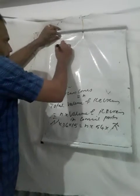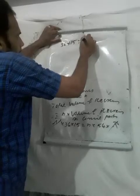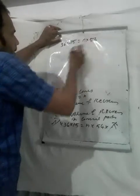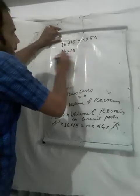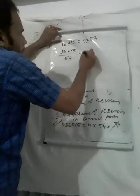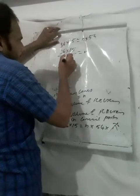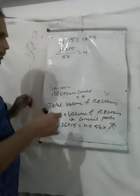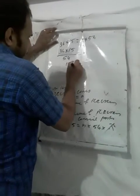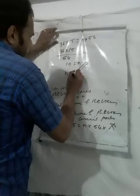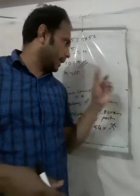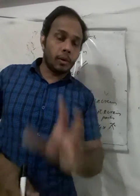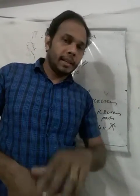So we get 36 into 15 equals N into 54. Therefore N equals 36 into 15 divided by 54, which gives N equals 10. So the number of cones is 10. You are getting 10 cones.